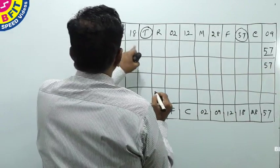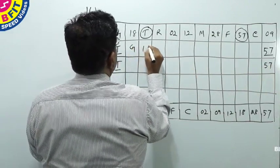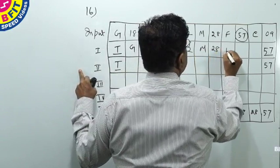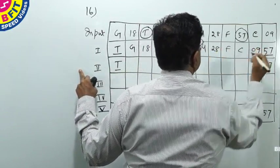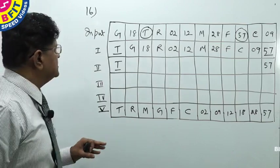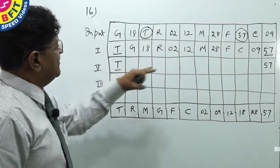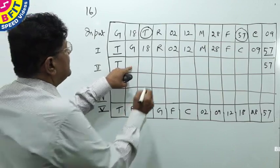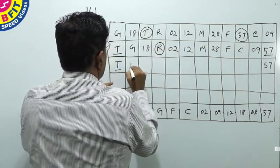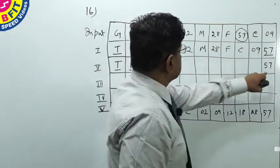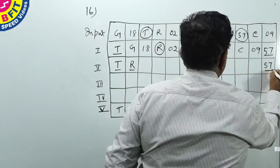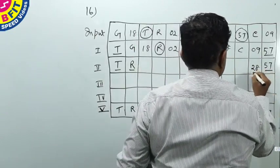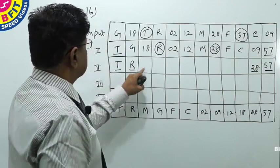In Step 2, the remaining elements are: G, 18, R, 02, 12, M, 28, F, C, 09. The next highest alphabet lower than T is R, which comes next. The next highest number lower than 57 is 28, which goes to the right extreme. So Step 2 is over. The remaining elements are G, 18, 02, 12, M, F, C, 09.